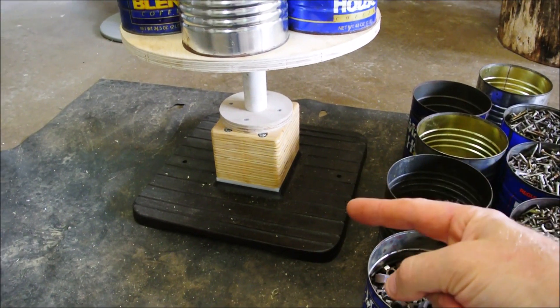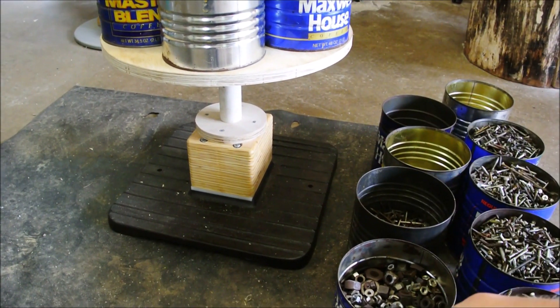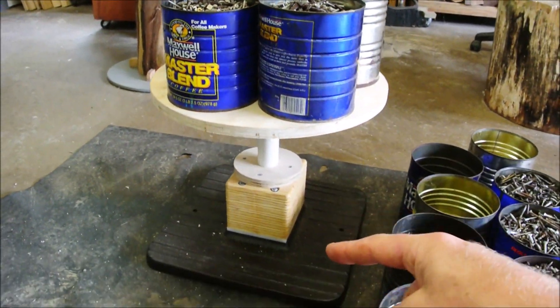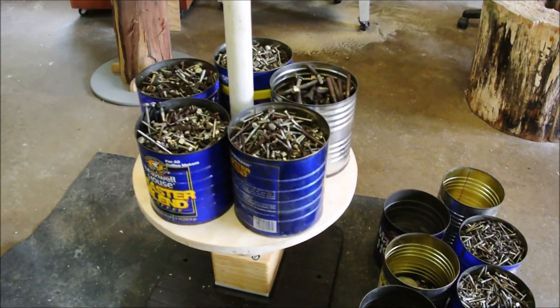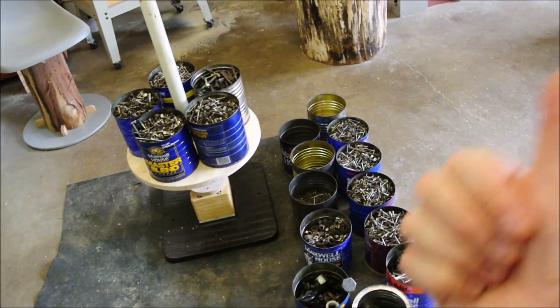And so what I'm working on here is a little lazy Susan sort of thing, a thing that rotates. And I want to have three shelves with five coffee cans each, and whatever doesn't fit in that is out of here.